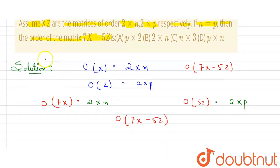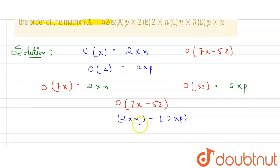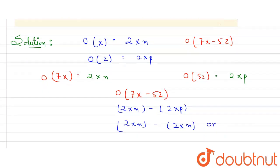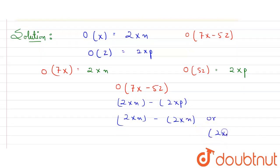So what will be the order of this whole matrix 7X minus 5Z? Order of 7X matrix we have calculated as 2 × n, and this is minus—we're just talking about order, not value. This is 2 × p. It is given that n equals p in the equation, so I can write 2 × n. The order of second matrix will be 2 × n also, or I can write 2 × p.